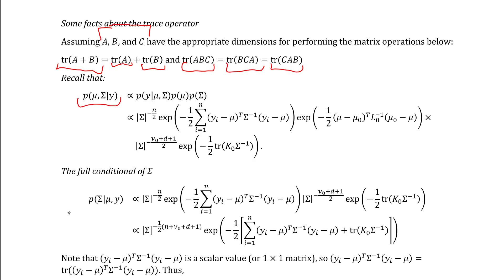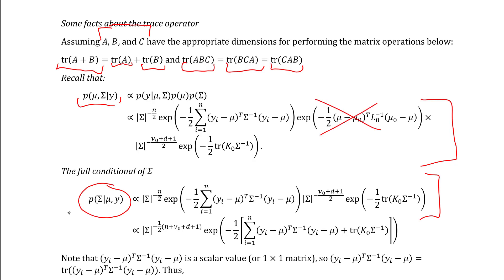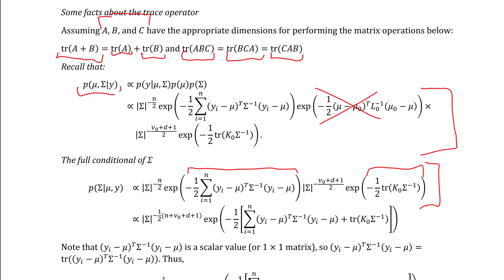Recalling that the joint posterior density of mu and sigma is proportional to this product, we now have what we need to derive the full conditional distribution of sigma. The full conditional distribution of sigma is proportional to this product, obtained by taking the unnormalized posterior density and dropping any terms not involving sigma. We then combine the exponents of the determinant of sigma to get this term, and combine the powers of the exponential functions into a single sum.